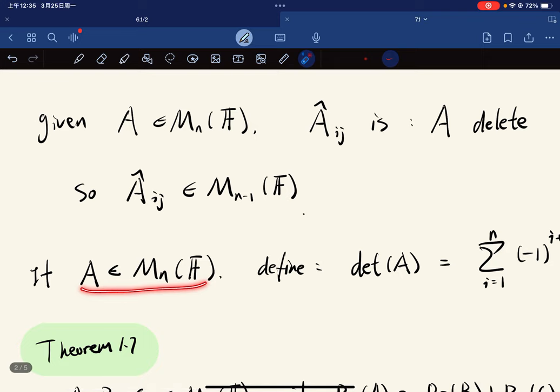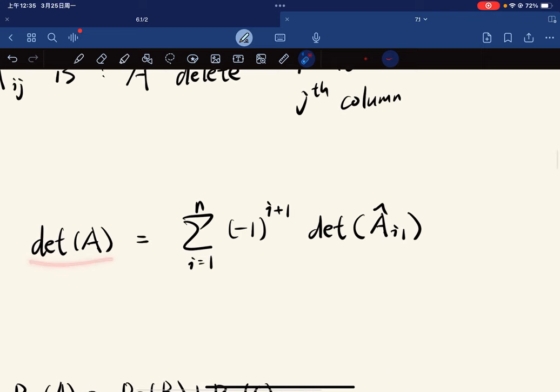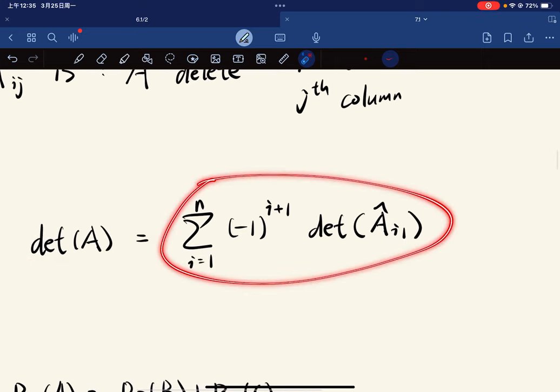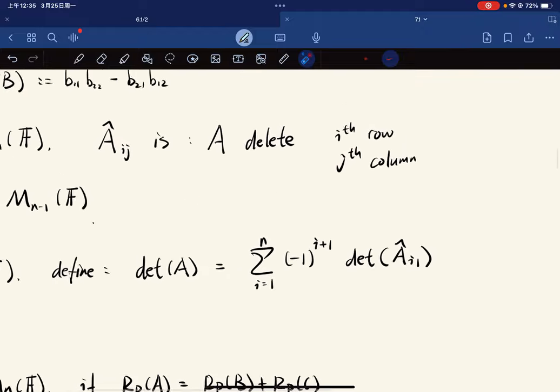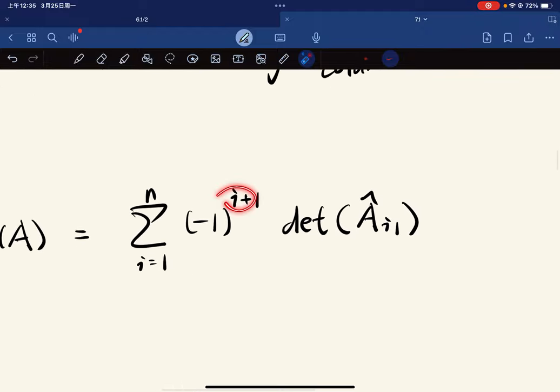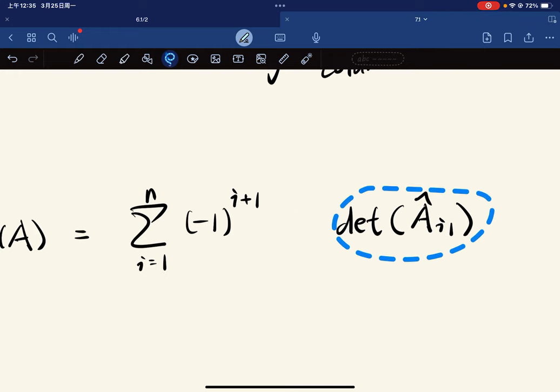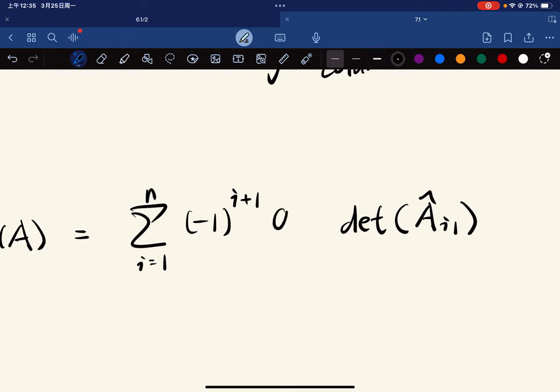So for n times n matrix, we define their determinant to be this. So pause and take a look at this definition. It's an alternating sum. And this should be A i1.